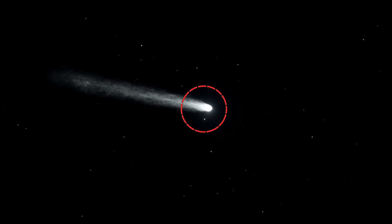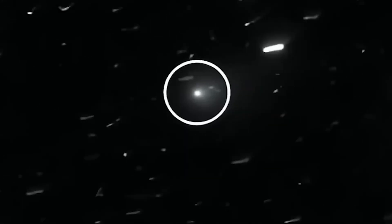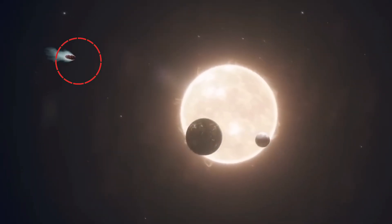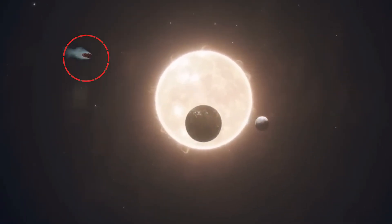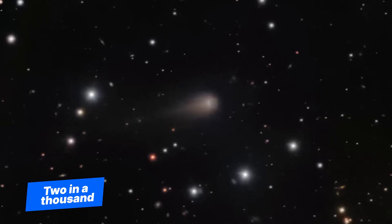Now let's talk about why scientists are freaking out. This object's trajectory is absolutely perfect. Too perfect. It's moving backwards compared to planets, but aligned within 5 degrees of our solar system's plane. The odds? Two in a thousand.